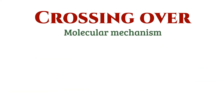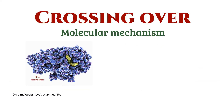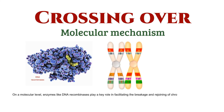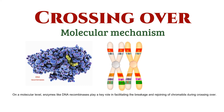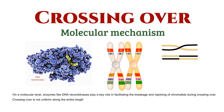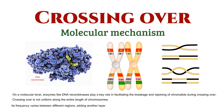On a molecular level, enzymes like DNA recombinases play a key role in facilitating the breakage and rejoining of chromatids during crossing over. It's important to note that crossing over is not uniform along the entire length of chromosomes — its frequency varies between different regions, adding another layer of complexity to the process.